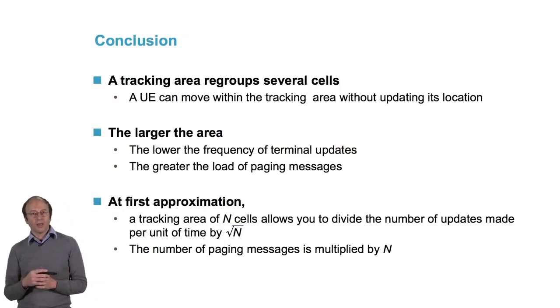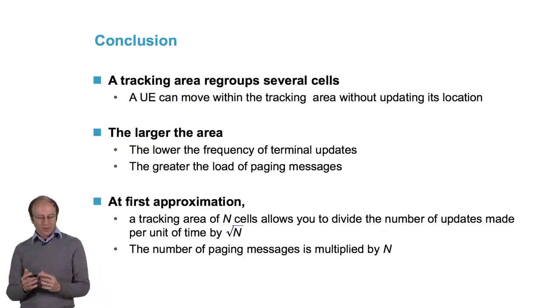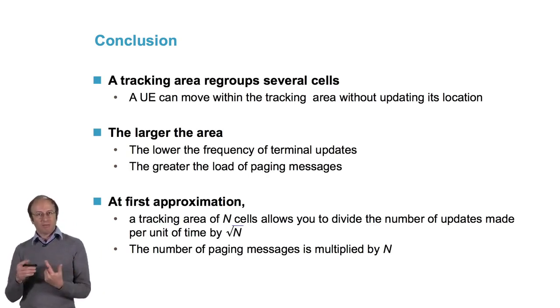In conclusion, a tracking area regroups several cells. A UE can move within the tracking area without updating its location. The larger the area, the fewer location updates we have to do. However, there'll be more paging messages to send. At first approximation, a tracking area of n cells allows you to divide the number of updates made per unit of time by the square root of n. The number of paging messages is multiplied by n.